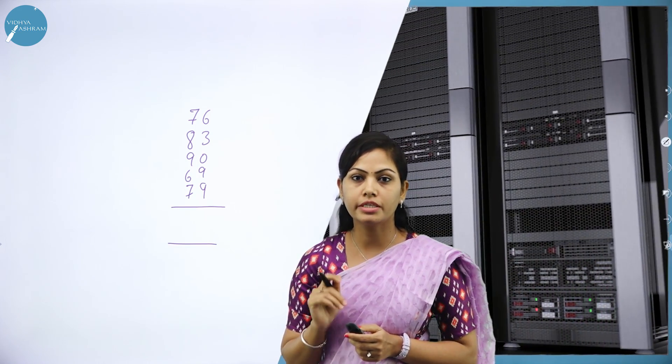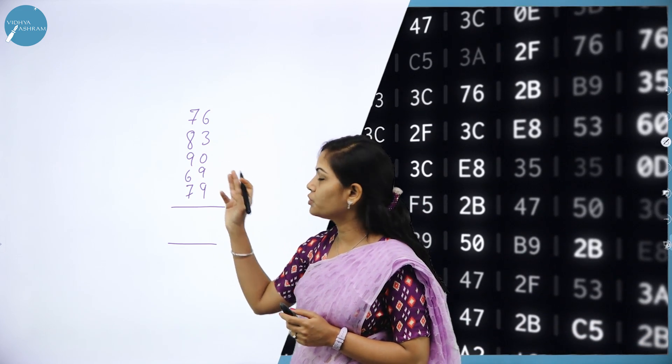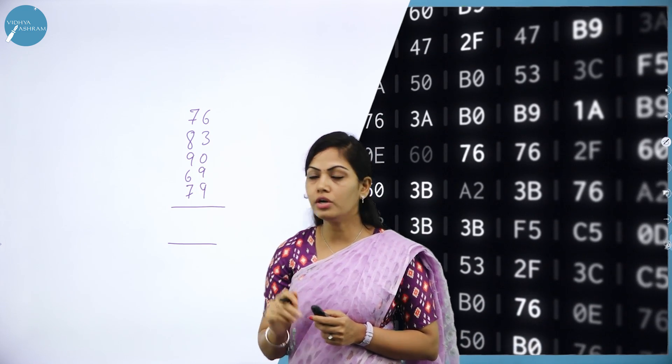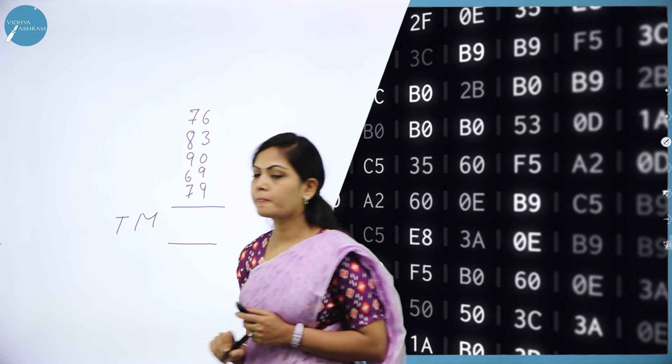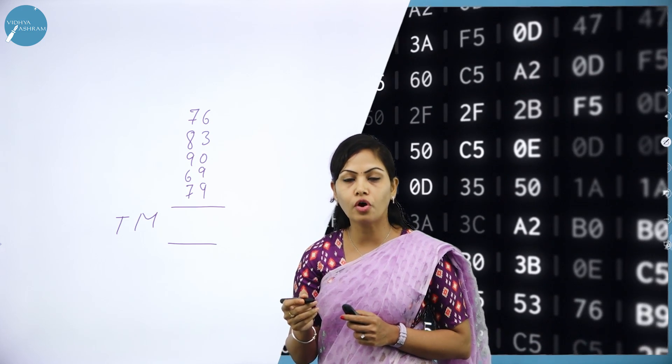We have to process this data to get useful information — that is called your output. After processing data we can call it information. For example, if these are marks scored by students, add all these digits to get total marks. If you divide the total mark by the number of subjects you get another output called percentage of the student. So data means raw facts, and information means processed data.